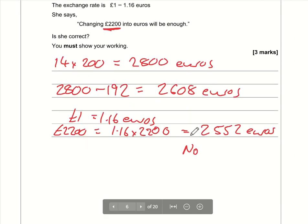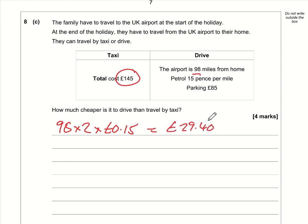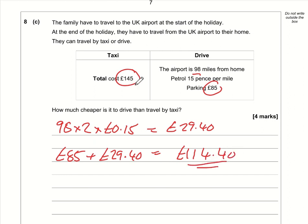Question 9 (taxi vs driving): the taxi costs £145. The airport is 98 miles from home, so the return journey is 98 × 2 miles at 15p per mile: 98 × 2 × £0.15 = £29.40 in fuel. Adding parking of £85: £29.40 + £85 = £114.40. This is cheaper than £145. The difference is £145 − £114.40 = £30.60.